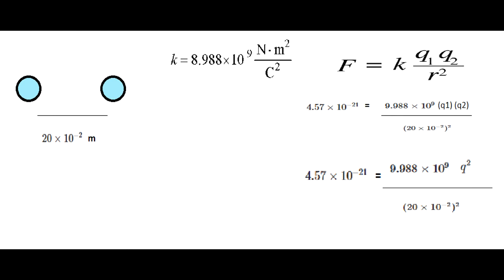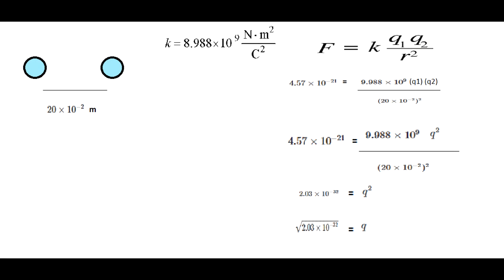The problem states that charge for both spheres is the same, so we can consider q1 and q2 to be q squared. So now we only have numbers and q squared. We are going to solve for q squared and take the square root of that to solve for q.